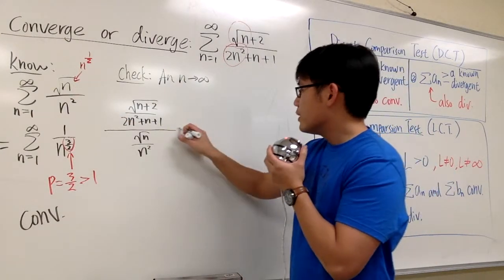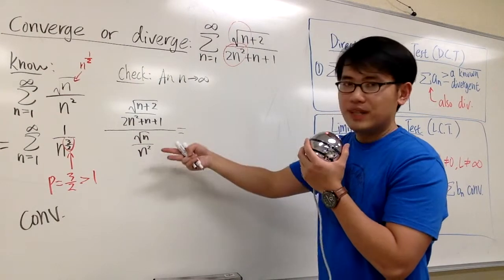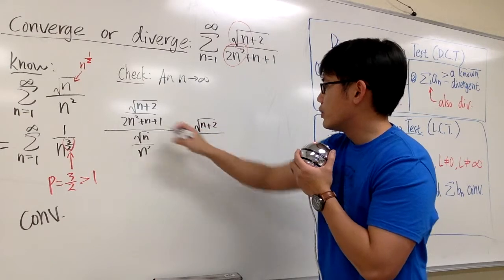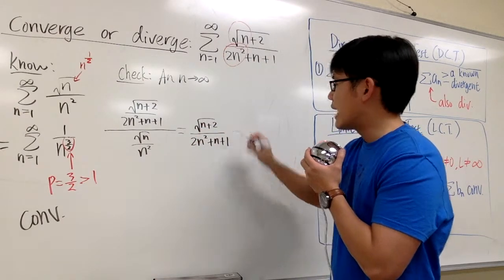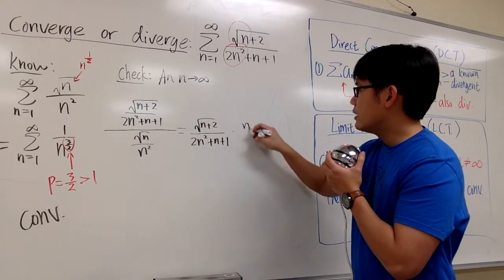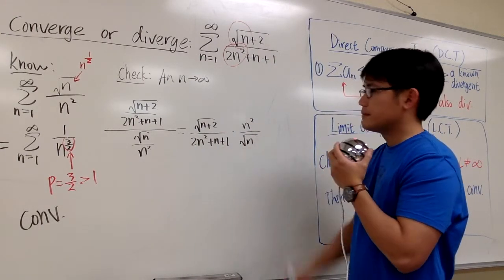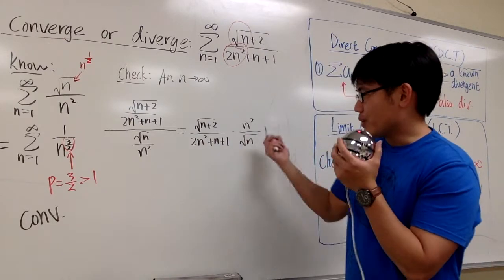We are going to do some algebra first. This gets flipped, so we have square root of n plus 2 over 2n squared plus n plus 1 times n squared over square root of n. And now, how can we take the limit?